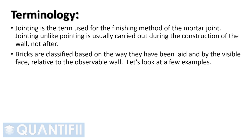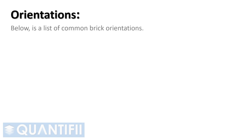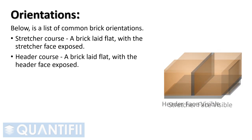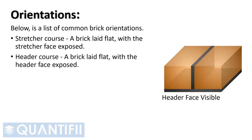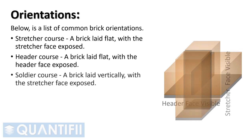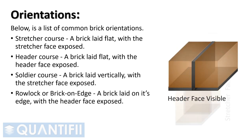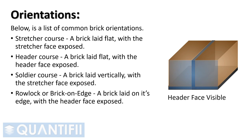Bricks are classified based on the way they have been laid and by the visible face relative to the observable wall. Common brick orientations include: stretcher course — a brick laid flat with the stretcher face exposed; header course — a brick laid flat with the header face exposed; soldier course — a brick laid vertically with the stretcher face exposed; and row lock or brick on edge — a brick laid on its edge with the header face exposed.